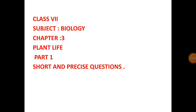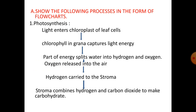For Class 7 Biology Chapter 3, Plant Life — short and precise questions. This is Part 1. The first question is: show the following processes in the form of flow charts. Number one is photosynthesis.